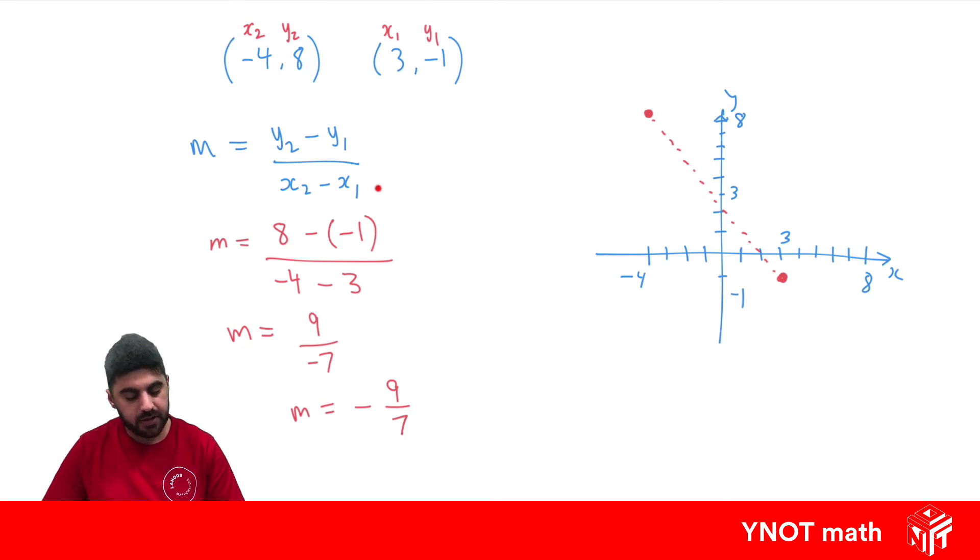So this formula actually is just looking at the difference in the y coordinates over the difference in the x coordinates. Let's have a closer look. So it's the difference in the y coordinates over the difference in the x coordinates. Remember, this is your rise and this is your run. So all we're doing here is actually just finding rise over run like we normally would.